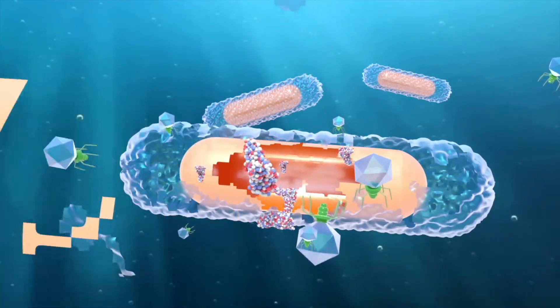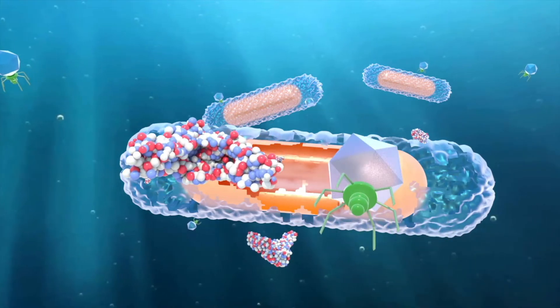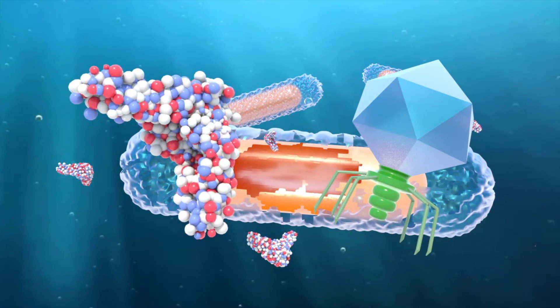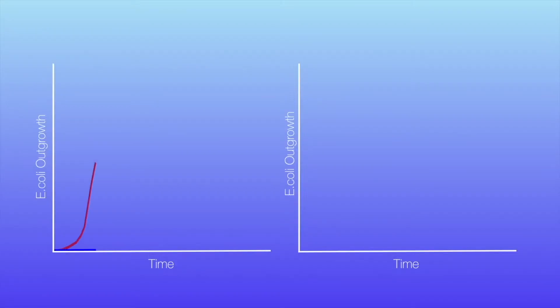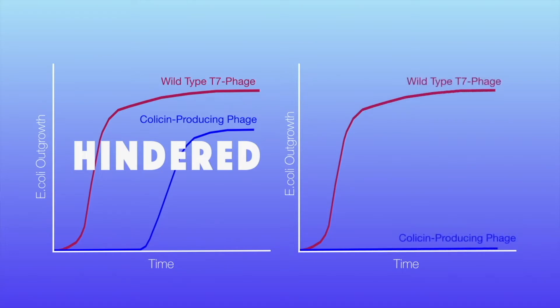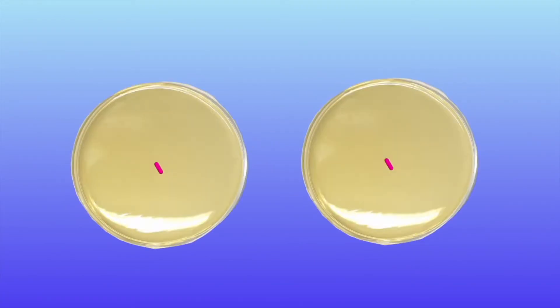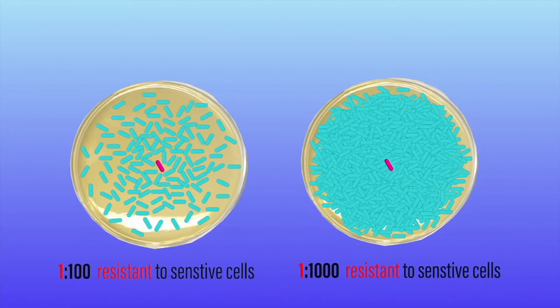The only way a bacterium would be able to survive this treatment is if they acquired resistance not only to the phage, but also to the Colicin. So we tested this idea out, and what we saw was resistance was, at the very least, hindered, but in some cases, completely inhibited, regardless of Colicin type or ratio of resistant to sensitive cells.